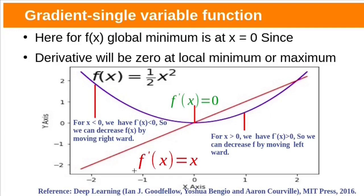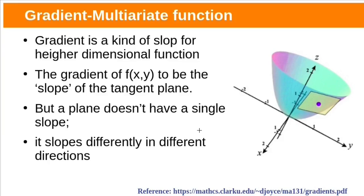Here our function is f(x) = x². The derivative of this function f'(x) is x. For this function, the global minimum is at x = 0. Since the derivative will be 0 at a local minimum or local maximum, at this minimum f'(x) = 0. For x less than 0, the derivative f'(x) is also less than 0, so to reach the minimum we need to decrease f by moving rightwards. For x greater than 0, the derivative is positive, so we need to decrease f by moving leftwards.